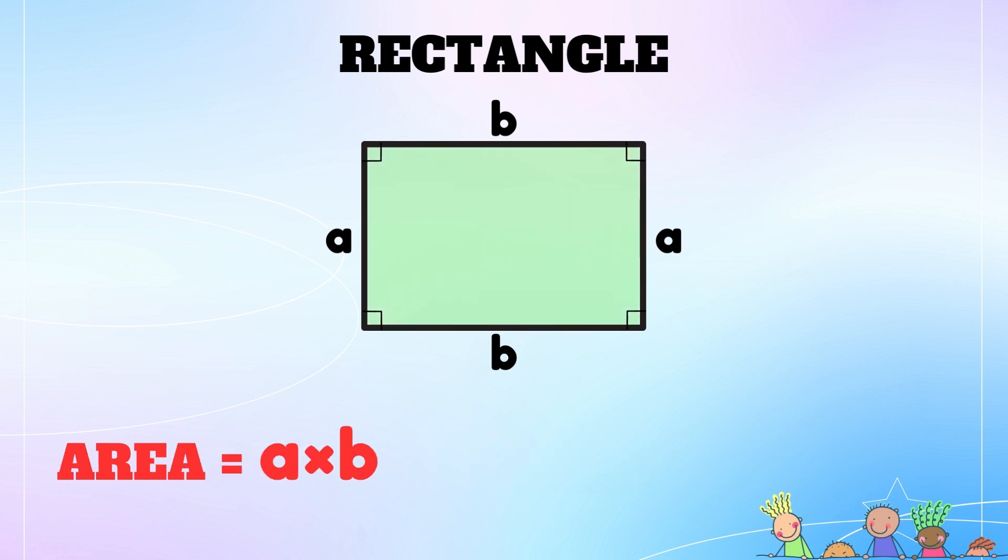To find the area of a rectangle, we have to multiply the base by the height. In this case, our base is b and our height is a. This will yield the formula for the area as a times b.